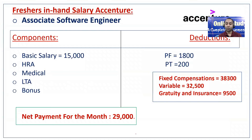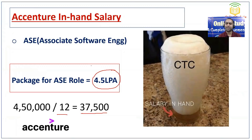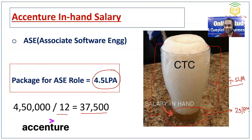But actually what you get is around 29,000 rupees per month. Now where does the rest of the money go? What is the variable, the gratuity, fixed compensation, joining bonus — each and everything we will see in detail. Every company when you look at the CTC will show 4.5 LPA, but what you are actually getting in hand is just around 29,000 per month. Before joining any company you should and must know the in-hand salary, because after all we work for money only.